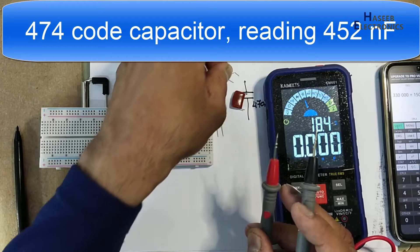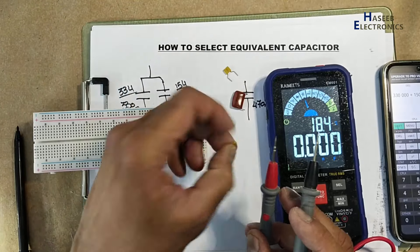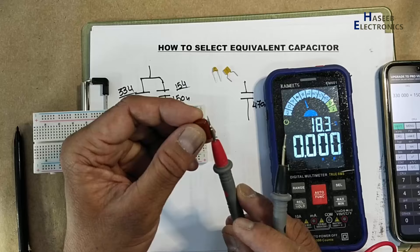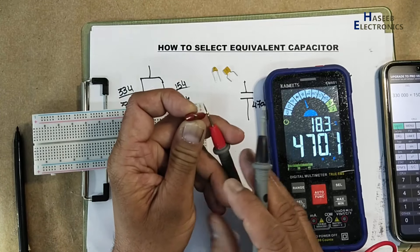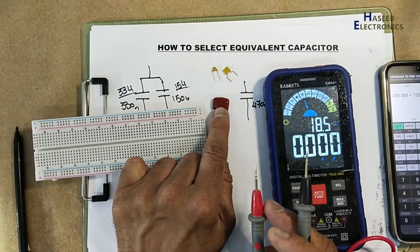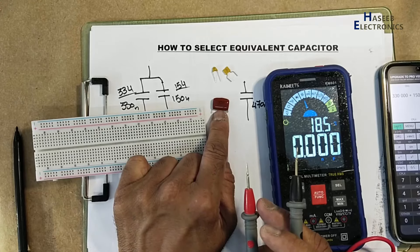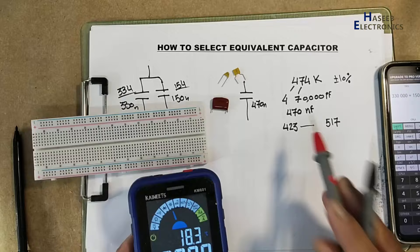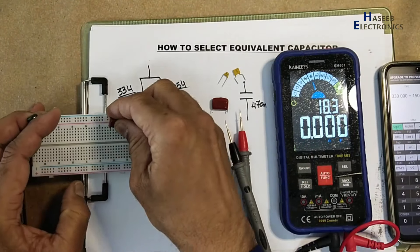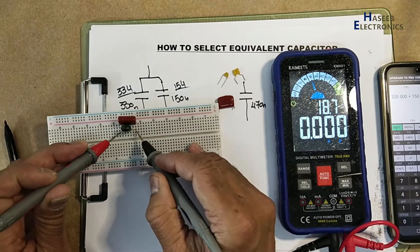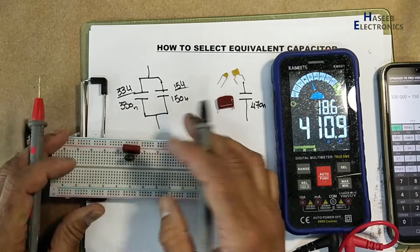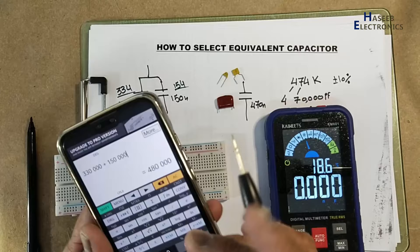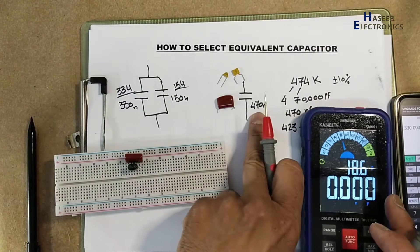Measuring: 452, 451, 434, 464, 470. 474 code is reading 470 nanofarad. This one 434, 440, like that. If the capacitor is within this range, that capacitor is good. Now we will use these two capacitors in parallel. Two capacitors in parallel, 478.9, so that is closer to 480 and that is closer to this value.